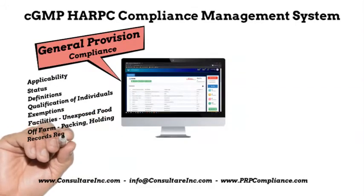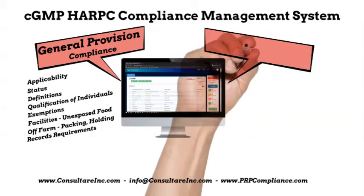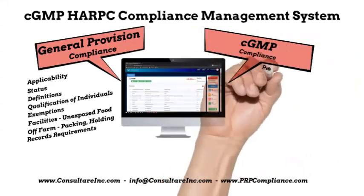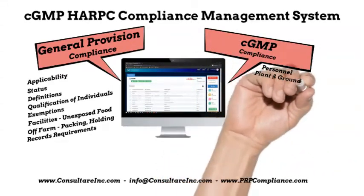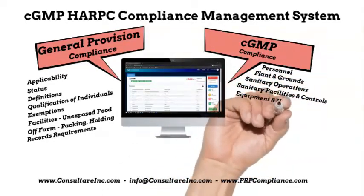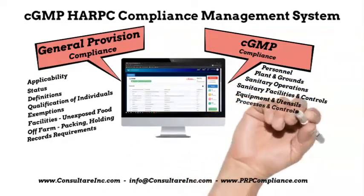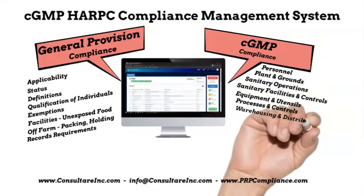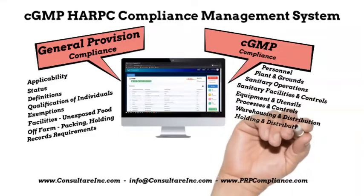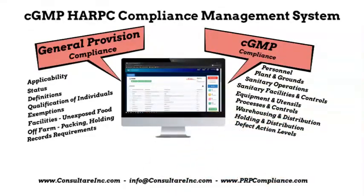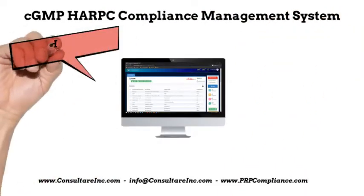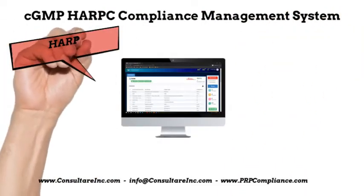The system tracks compliance for current good manufacturing practice, including personnel, plant and grounds, sanitary operations, sanitary facilities and controls, equipment and utensils, processes and controls, warehousing and distribution, holding and distribution of human food by-products for use as animal food, and defect action limits.